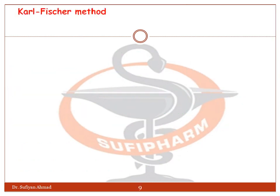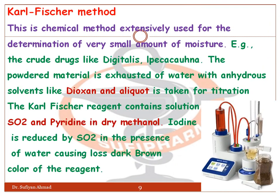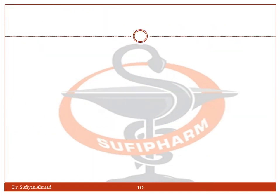The Karl Fischer method is a chemical method extensively used for determination of very small amounts of moisture present — for example, in crude drugs like digitalis and ipecac. The powdered material is exhausted of water with an anhydrous solvent like dioxane, and an aliquot is taken for titration. The Karl Fischer reagent contains a solution of iodine, sulfur dioxide, and pyridine in dry methanol. Iodine is reduced by sulfur dioxide in the presence of water, causing loss of the dark brown color of the reagent.